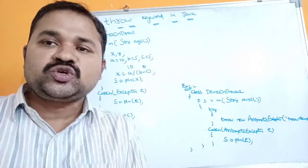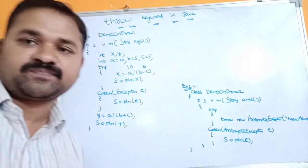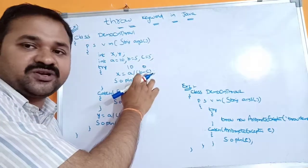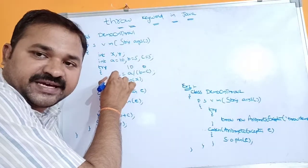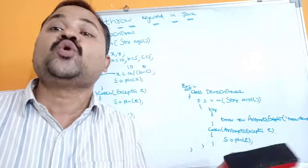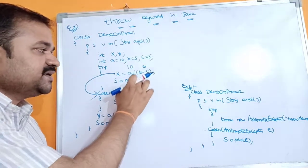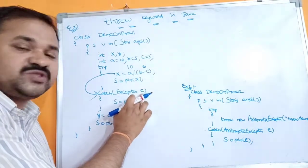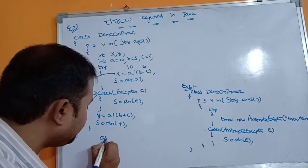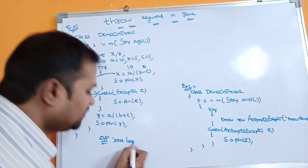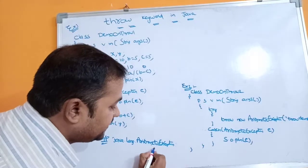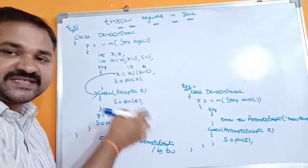When the exception occurs, the throw keyword implicitly throws the corresponding exception object to the catch block. In this example, the exception is division by zero, which is ArithmeticException. The throw keyword implicitly throws this exception object to the catch block. Control goes to the catch block with parameter Exception e, which holds the ArithmeticException object. System.out.println(e) prints: java.lang.ArithmeticException: division by zero, since ArithmeticException is in the java.lang package.